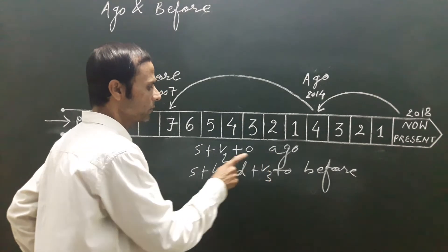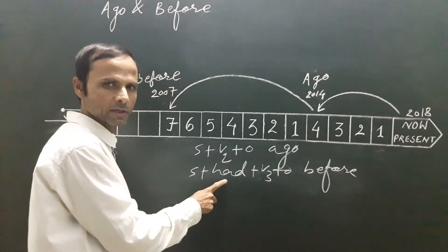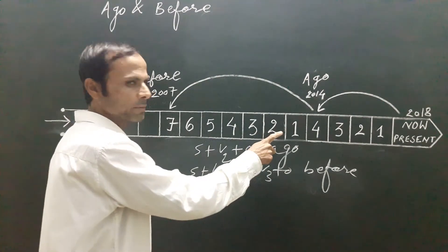We use ago with past simple tense, we use before with past perfect tense. And here is an example for you.